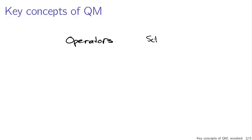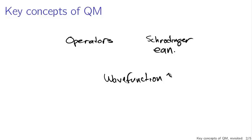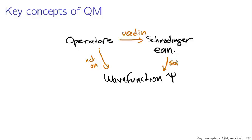Operators are used in the Schrödinger equation and act on the wave function. What we haven't really talked about a lot yet is how to determine the wave function — and the wave function is determined as solutions to the Schrödinger equation. That's what chapter two is all about: solving the Schrödinger equation for various circumstances.